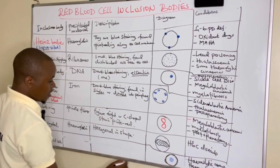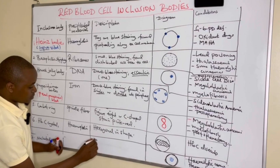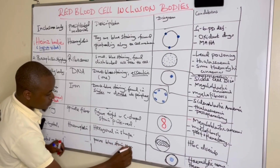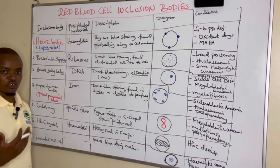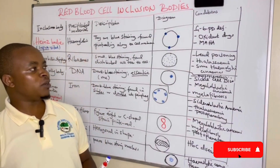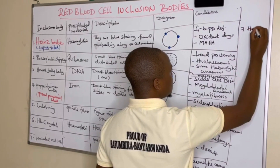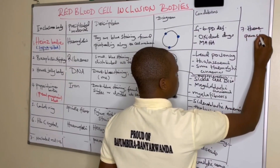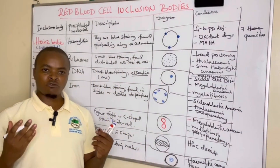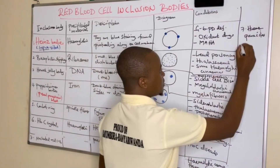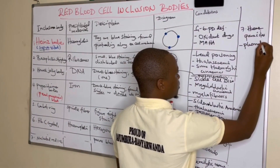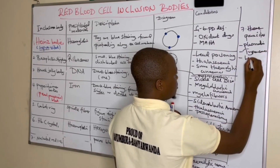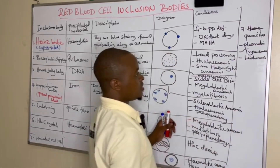Nucleated red cells possess a blue staining nucleus. Additionally, hemoparasites are also considered red cell inclusion bodies — these include malaria (Plasmodium species), trypanosomes, and Leishmania. These hemoparasites can also be found on a thin blood film and should be drawn and described.